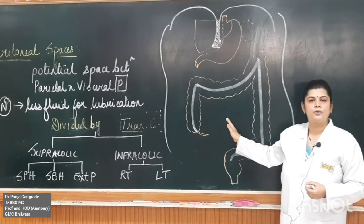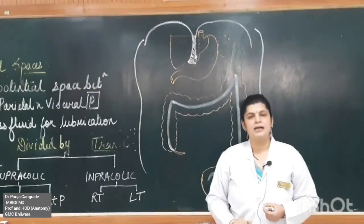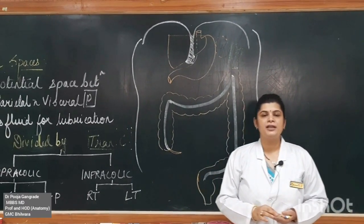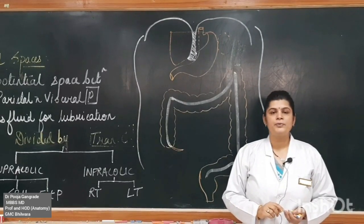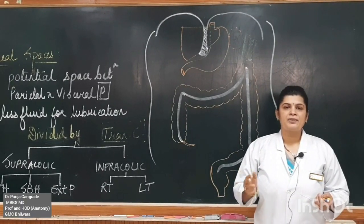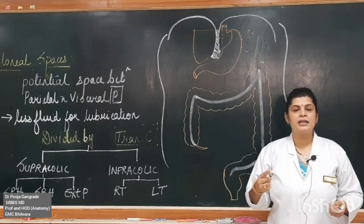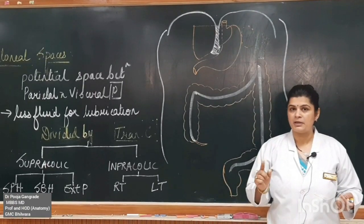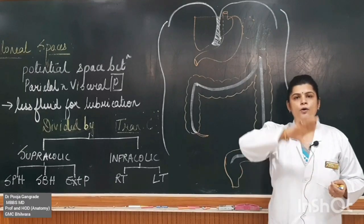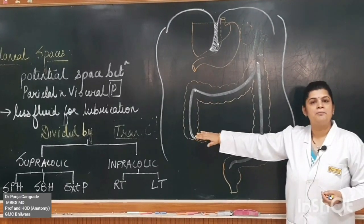The infra-colic compartment is again divided into two parts by the root of mesentery. In the first lecture on peritoneum, we saw that the bilaminar folds of peritoneum holding the abdominal organs are given specific names — omenta for the stomach, mesentery for the intestine, and mesocolon for the colon. The double-layered peritoneal fold holding the long small intestine is called the mesentery, and it divides the infra-colic compartment into two parts.